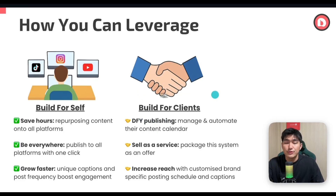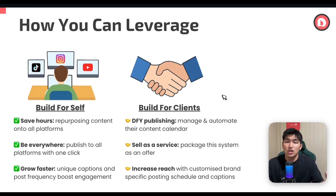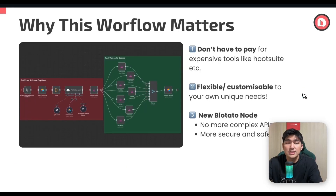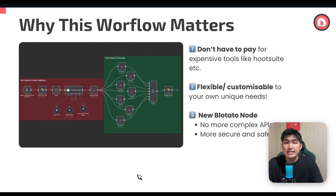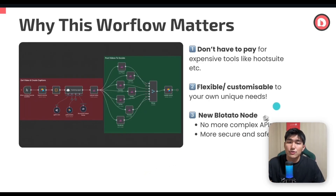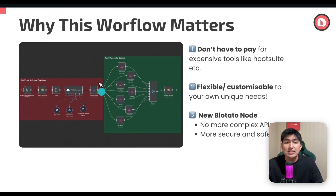You could also fall into the second category: to build for clients. How does this workflow benefit you if you fall into this category? You can actually leverage this workflow to create publishing systems for your own clients to manage and automate their content calendar. You could also sell this system as a service by packaging it as an offer. It helps your clients increase their reach with customized brand-specific posting schedules and captions. This specific workflow is built on N8N, a no-code tool, which allows us to customize different types of automation systems for our own use cases. By using this system, you firstly don't have to pay for expensive tools like Hootsuite, and on top of that, this system is also flexible and customizable to your own unique needs.